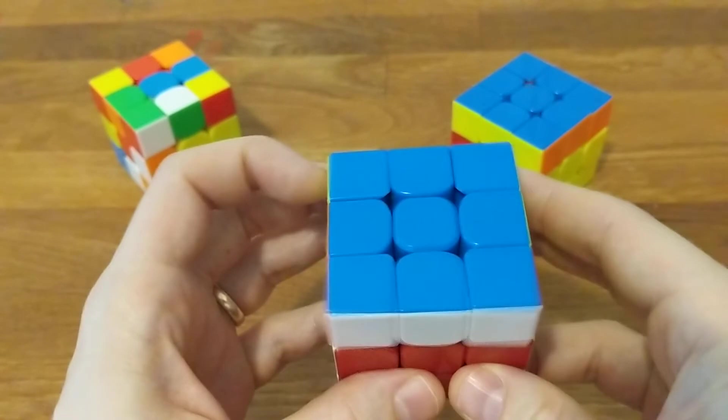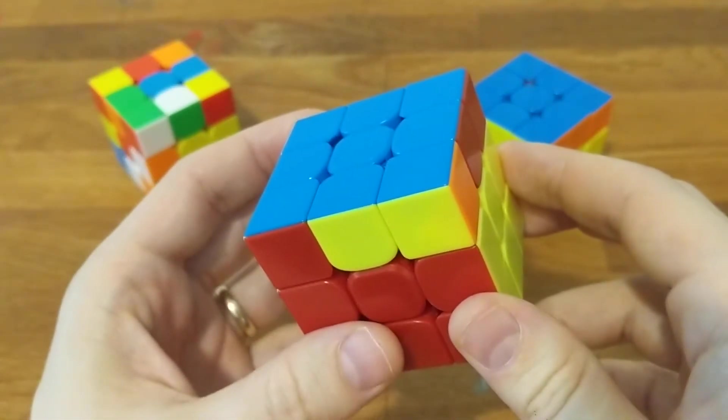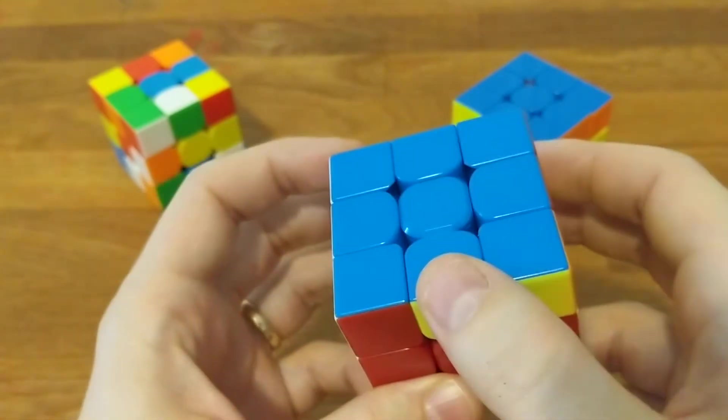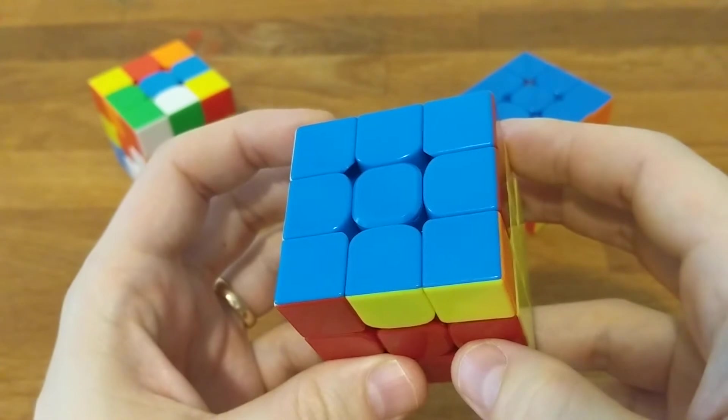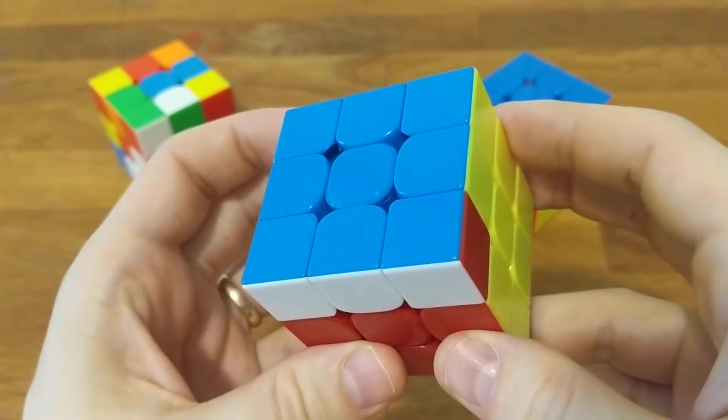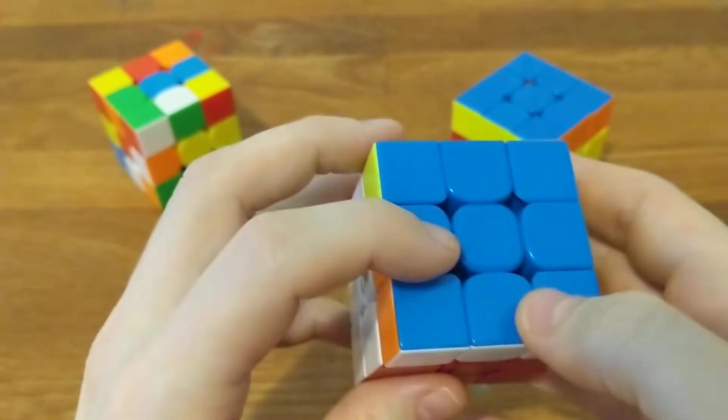Two unsolved pieces means odd parity. And since we can solve them with one swap, buffer to B. And after a U prime, these three unsolved pieces can be solved with two swaps, buffer to D to A.